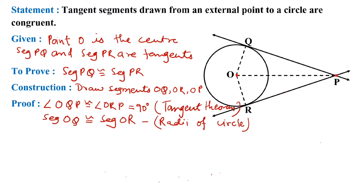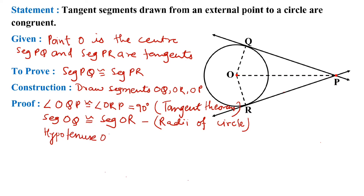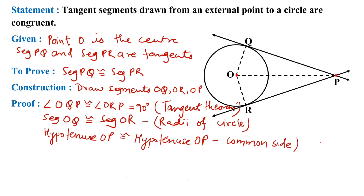What else is congruent in this figure? Seg OP is common to both triangles and is the hypotenuse of both triangles. So hypotenuse OP is congruent to itself as it is the same segment.